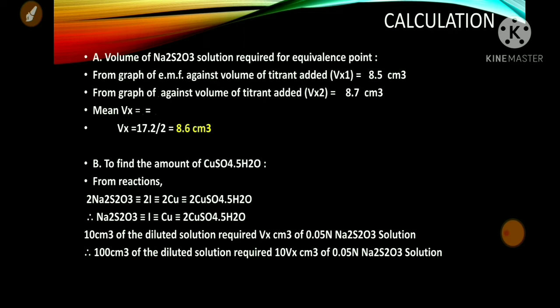Secondly, find the amount of copper sulphate pentahydrate. Two equivalents of sodium thiosulphate are equivalent to two equivalents of iodide ion, which is equivalent to two copper ions, which is equivalent to two moles of copper sulphate pentahydrate. Therefore, the ratio is 1:1. Hence, 10 cm³ of the diluted solution required Vx = 8.6 cm³ of 0.05 N sodium thiosulphate solution. Therefore, 100 cm³ of the diluted solution requires 10 × 8.6 cm³ of 0.05 N sodium thiosulphate solution.